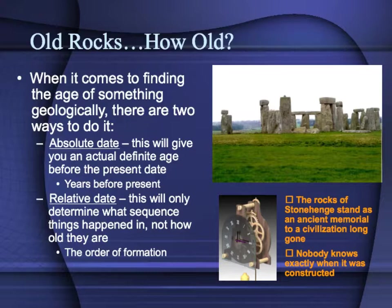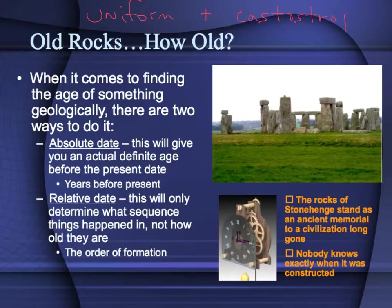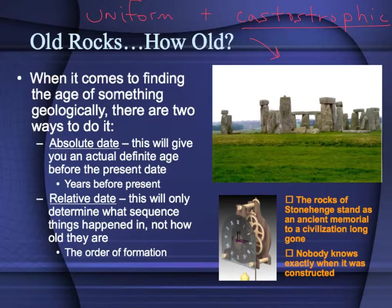With catastrophism and uniformitarianism standing in stark contrast to each other, geologists would probably agree that uniformitarianism is the guiding force — the Earth does change slowly over time — but every so often there are catastrophic events that can alter things significantly. For instance, an asteroid or meteor impact that wipes out 80% of the world's species.